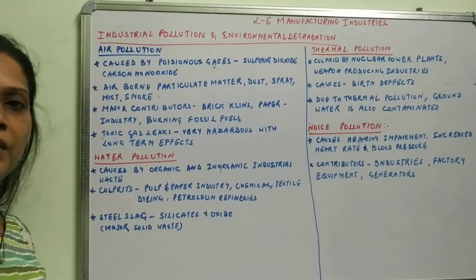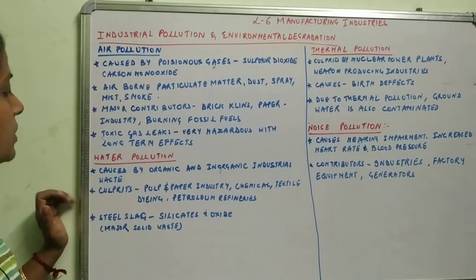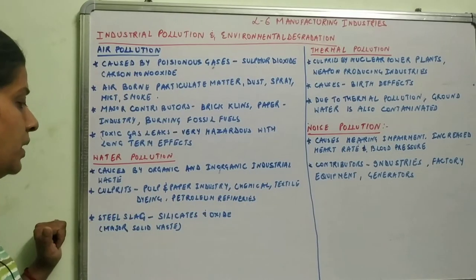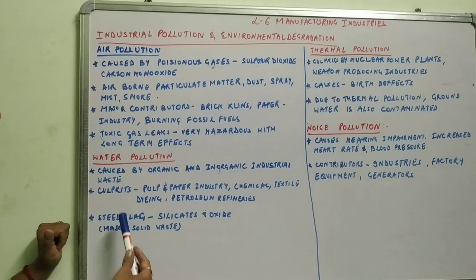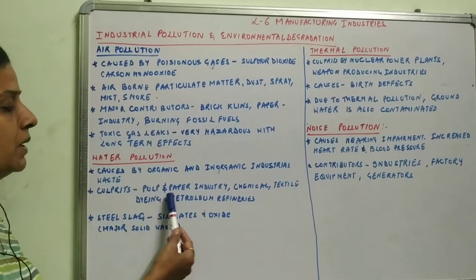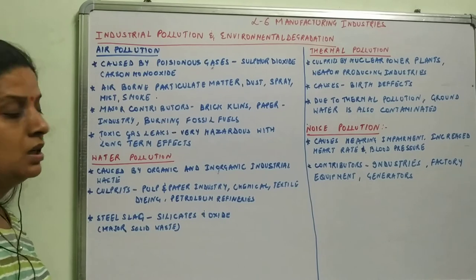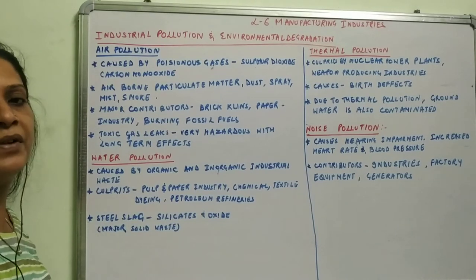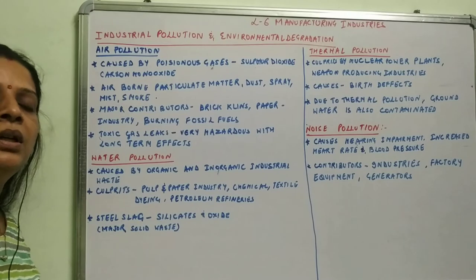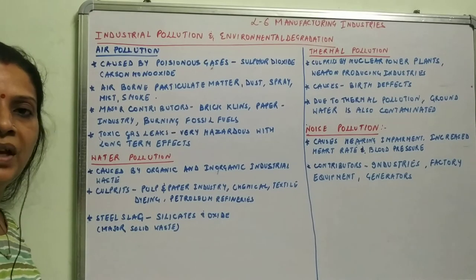Next is water pollution, caused by organic and inorganic industrial waste. The main contributors to water pollution are the pulp and paper industry, chemical and textile dyeing industries, petroleum refineries, and fertilizer and chemical industries. They all contribute to water pollution.